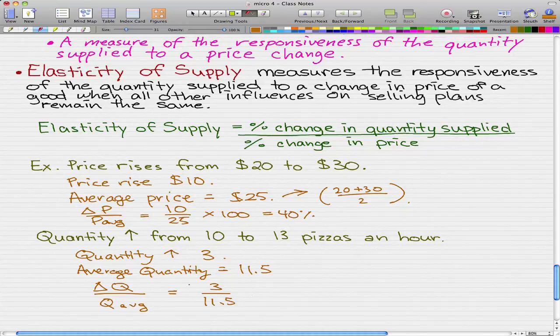Now that is 3 over 11.5, and that gives us a total of 26% because 3 over 11.5 is 0.26 times by 100, we get 26%.